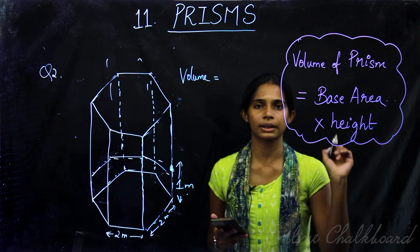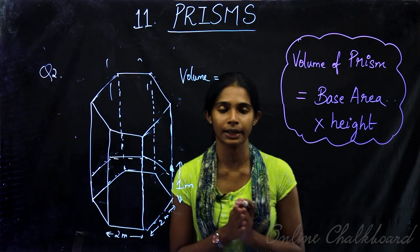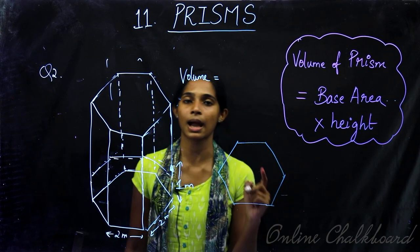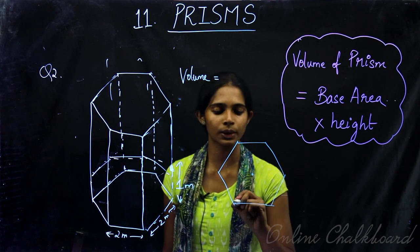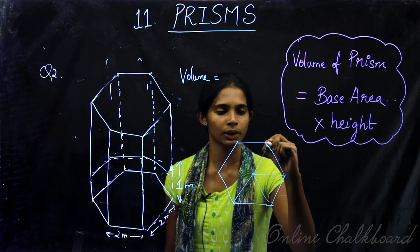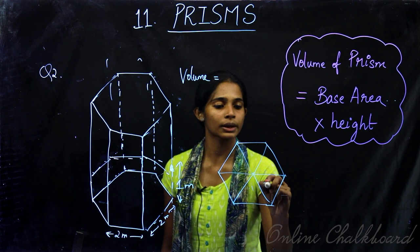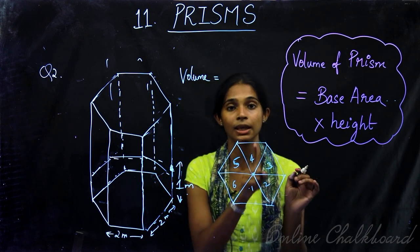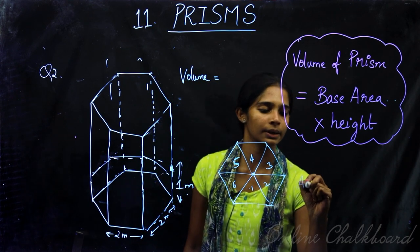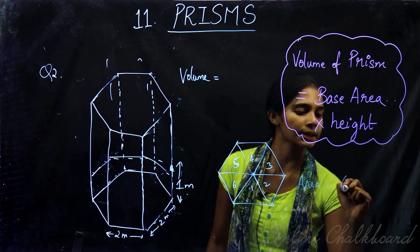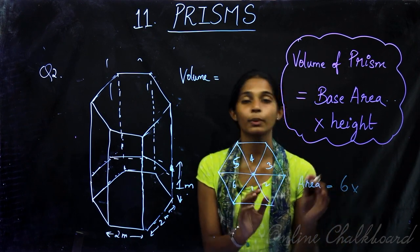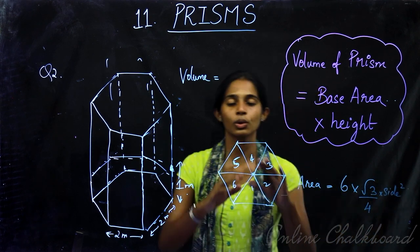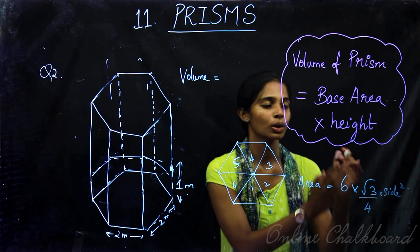Now what is the area of the base? We have a regular hexagon — all sides and all angles are equal. If we join the center to each vertex, we get 6 equilateral triangles. So the area of a regular hexagon is equal to 6 times the area of each equilateral triangle.